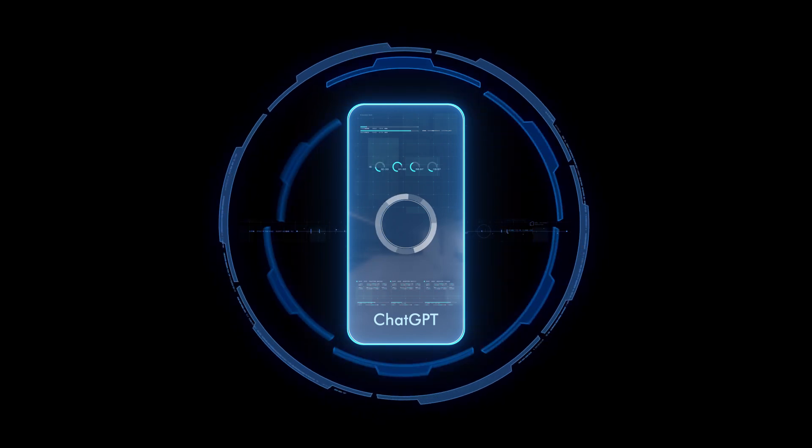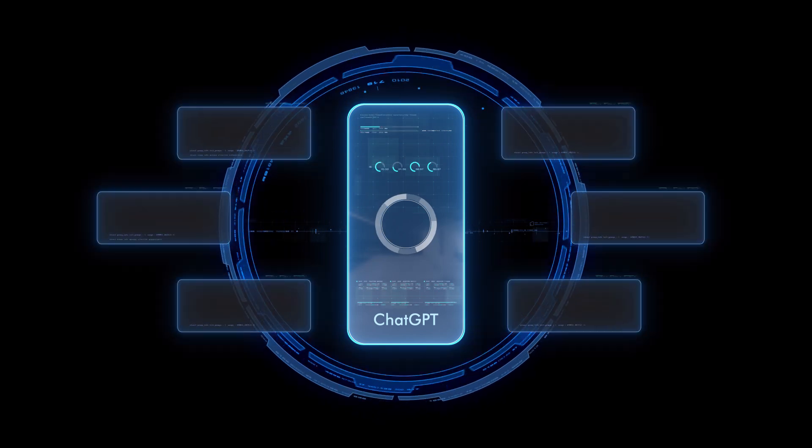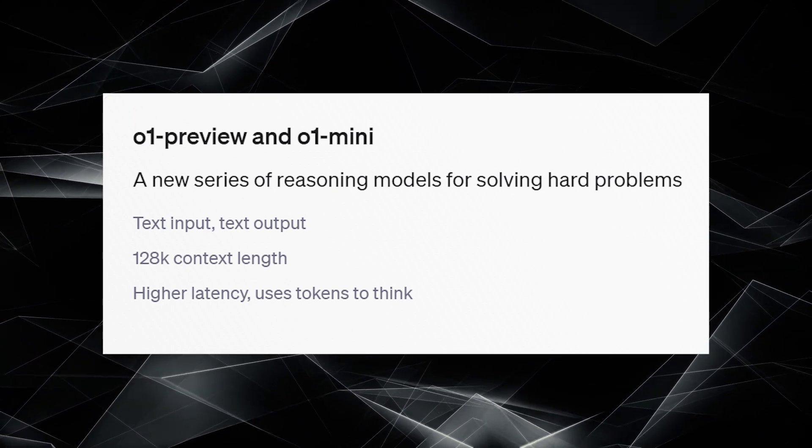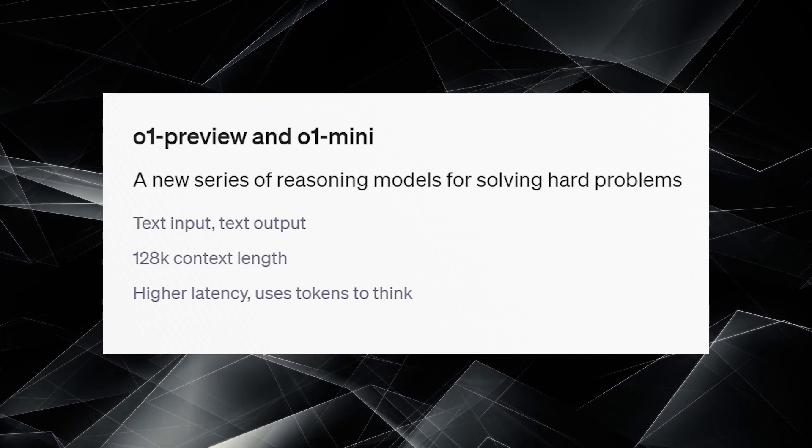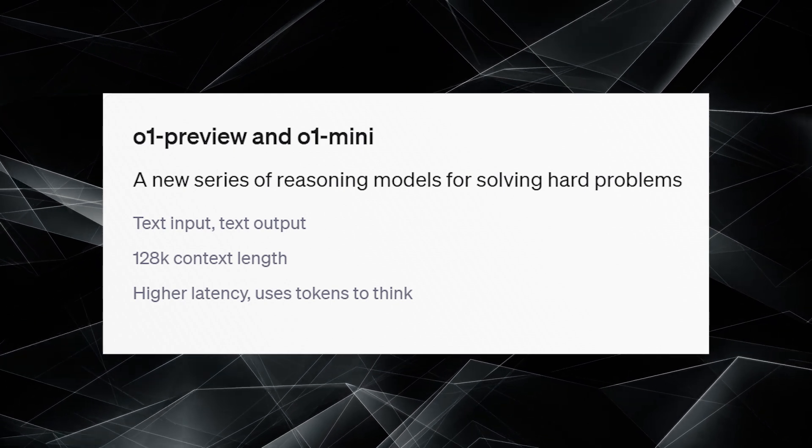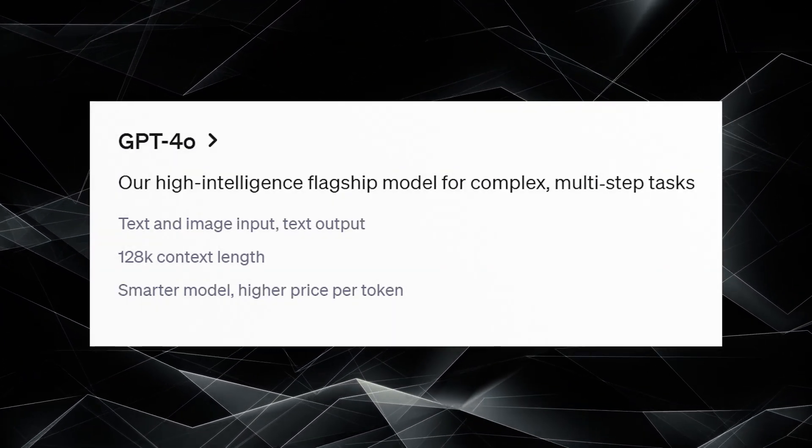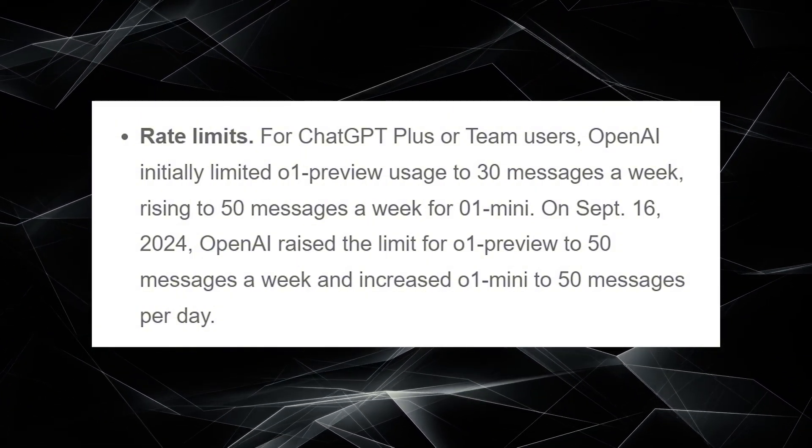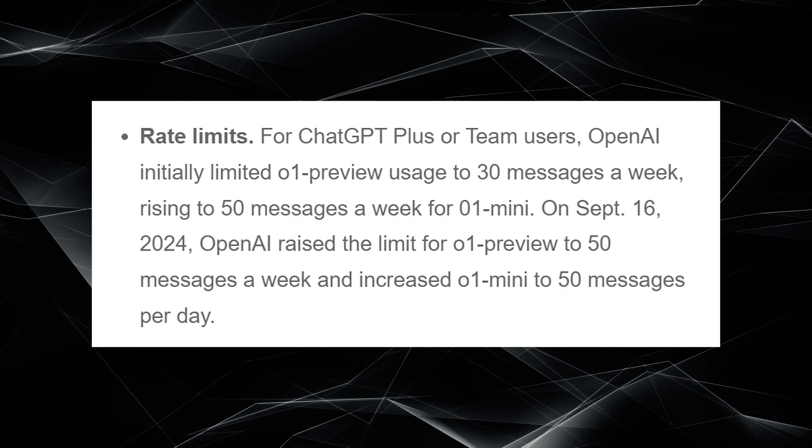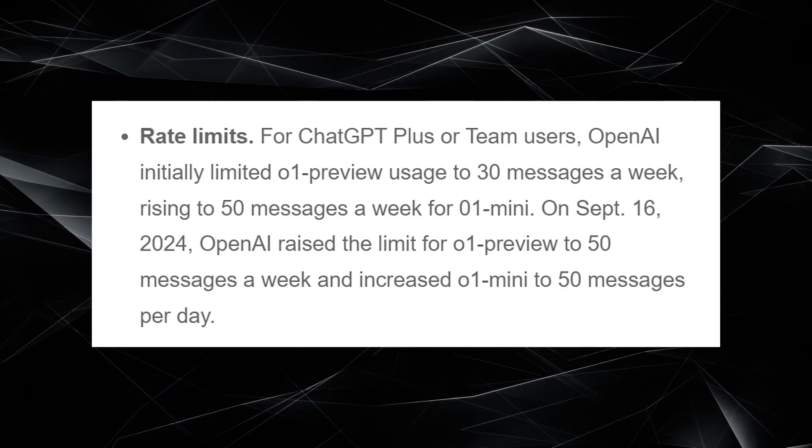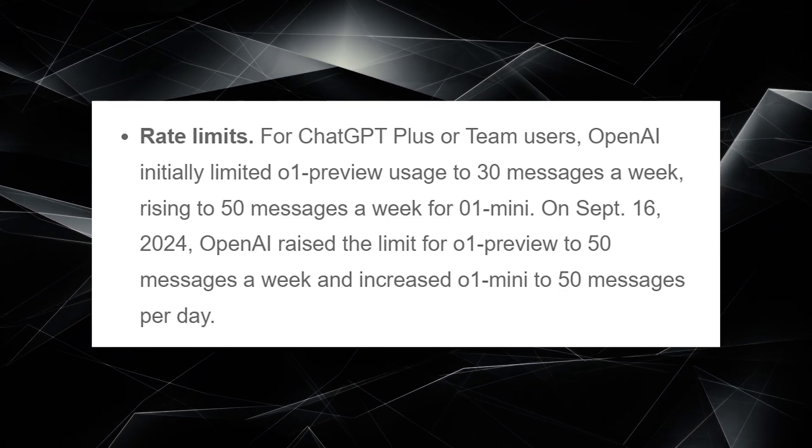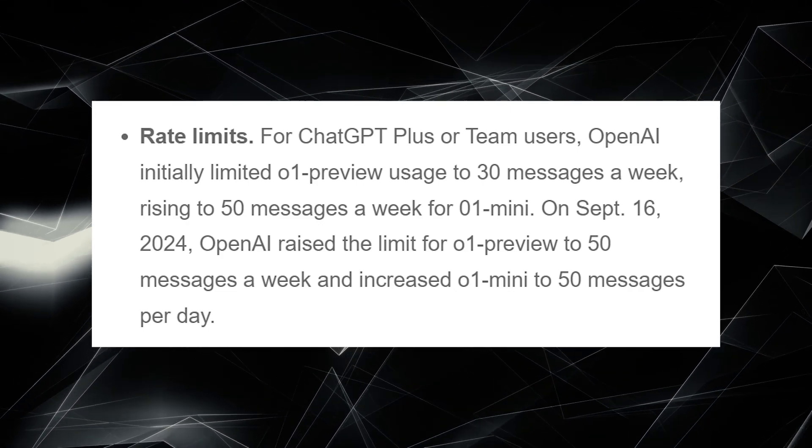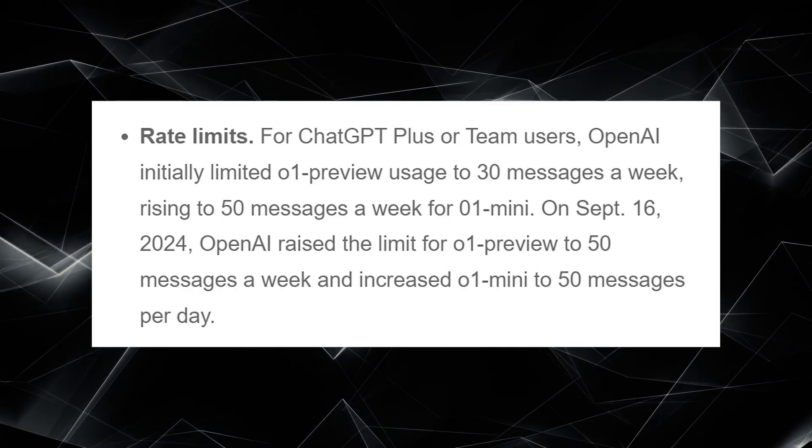Now, let's be real, as impressive as these models are, they do have their limitations. Right now, they only support text-based tasks. That means no image generation, no web browsing, and no file uploads, which limits their versatility compared to GPT-4. Plus, there are usage caps: 30 messages a week for Zero-One preview and 50 for Zero-One mini, which can be frustrating if you need consistent, long-term access. OpenAI has promised to add more features in the future, but for now, GPT-4 remains the better option for general use cases.